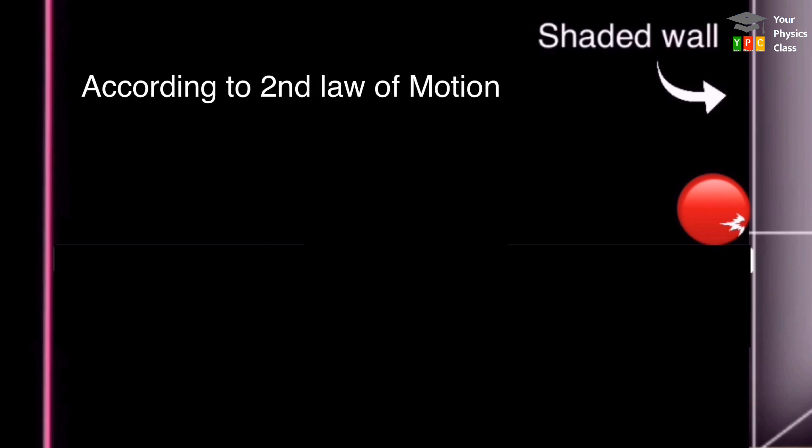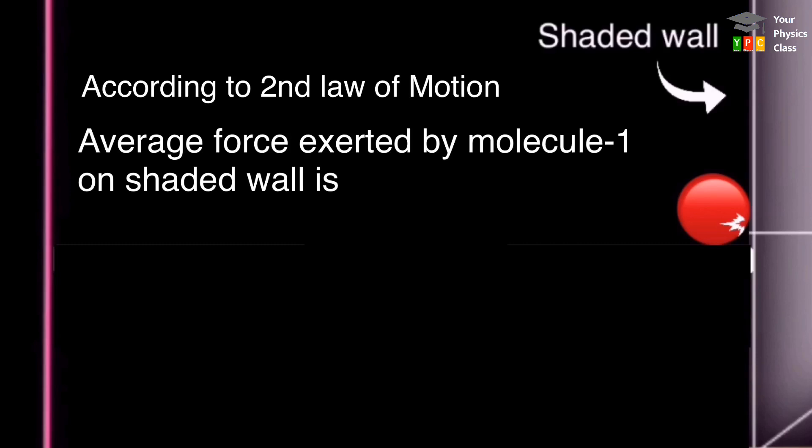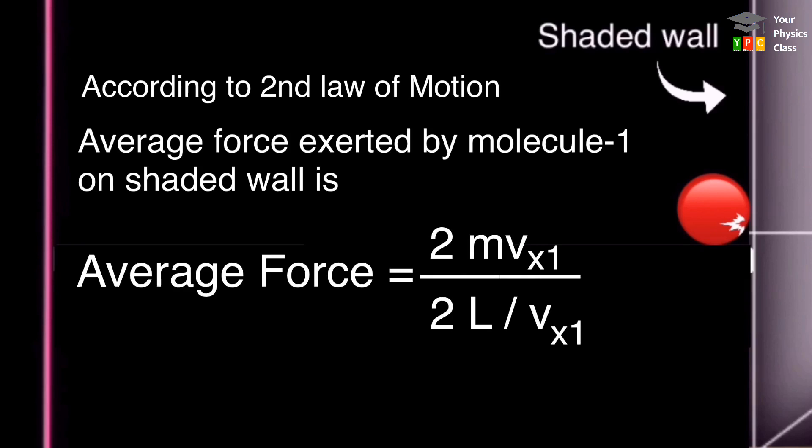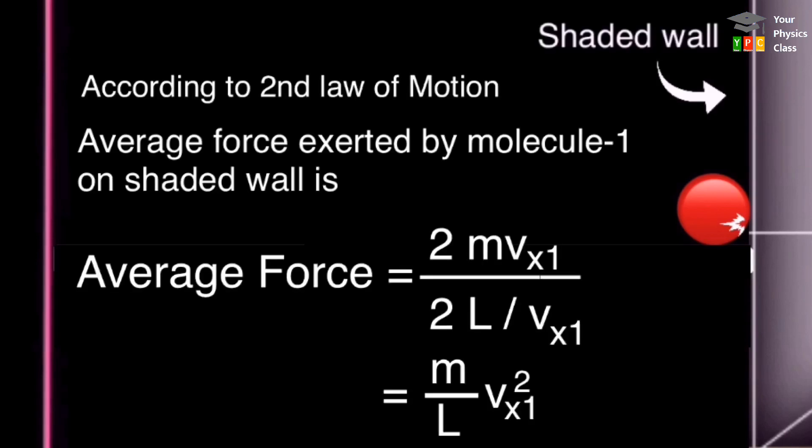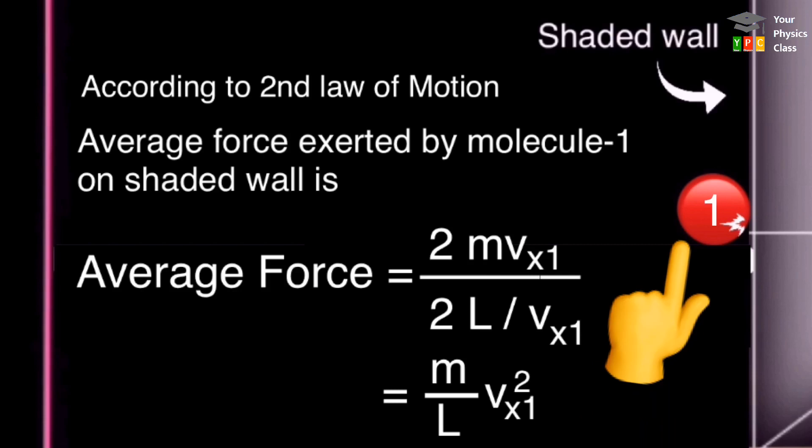According to second law of motion, average force exerted by molecule 1 on shaded wall is changing momentum upon time. So, ise modify karne pe milta M by L into VX1 square. Yahan subscript mein 1 additional lagane ka matlab hai molecule 1 ke liye main likh raha hu.